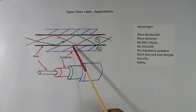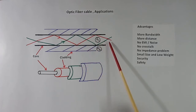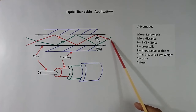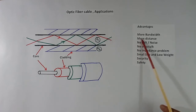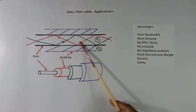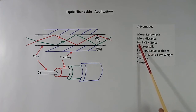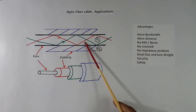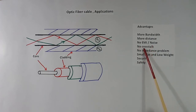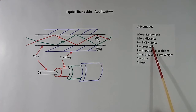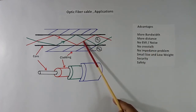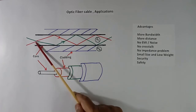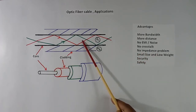These are the advantages of fibre optic cable compared to copper cable. First, more bandwidth — we can transmit more data. More distance — we can transmit signals for longer distances. No EMI noise problem, because there is no electrical signal in the glass fiber. No crosstalk — unlike parallel copper cables, there is no interference. No impedance matching problem, which is required in copper wire for longer distances.